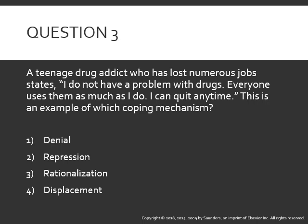Question three: A teenage drug addict who has lost numerous jobs states, 'I do not have a problem with drugs — everyone uses them as much as I do. I can quit anytime.' This is an example of what coping mechanism? One, denial; two, repression; three, rationalization; or four, displacement. The answer is number one — denial. Denial is a more serious form of repression where the person lives as though an unwanted piece of information or reality does not exist.